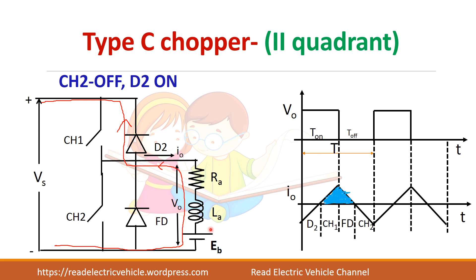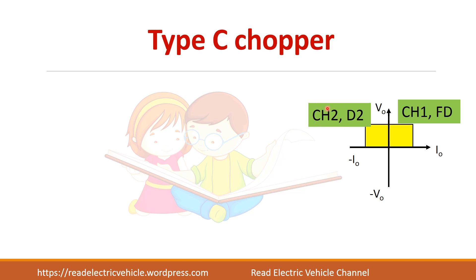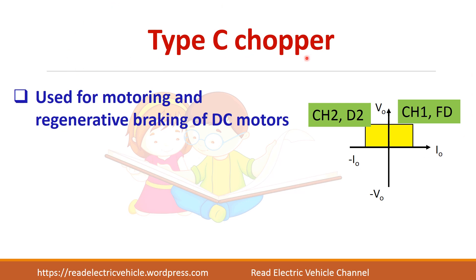This is the regenerative mode, and for this E should be greater than the supply voltage. During D2 conduction, V0 equals Vs and I0 is negative. To summarize type C chopper: for first quadrant operation, switch one and the freewheeling diode are used; for second quadrant operation, CH2 is turned on and off, and D2 is used. Type C chopper is used for both forward motoring and regenerative braking of DC motors.